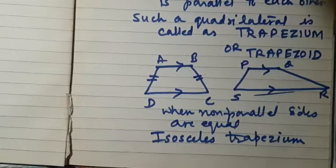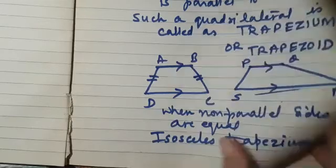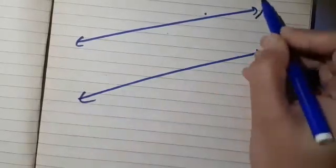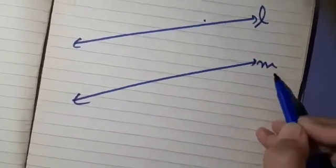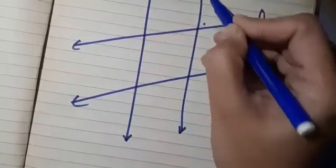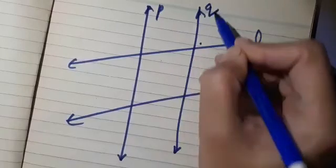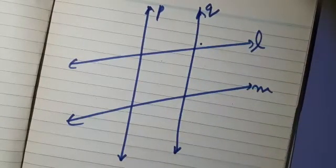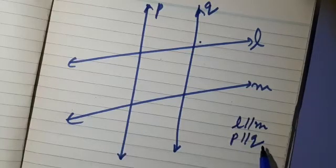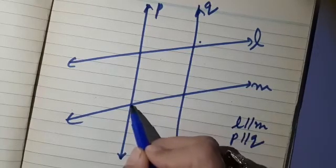Now let us do another observation. We will take a pair of lines parallel to each other — here L is parallel to M. Let me take another pair: I have drawn two more lines P and Q which are also parallel to each other. So L is parallel to M and P is parallel to Q.